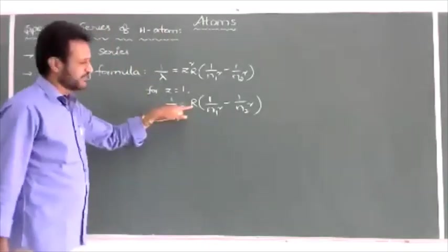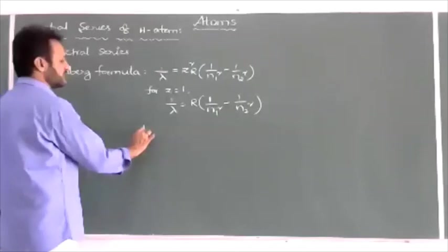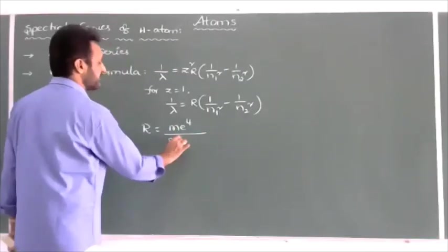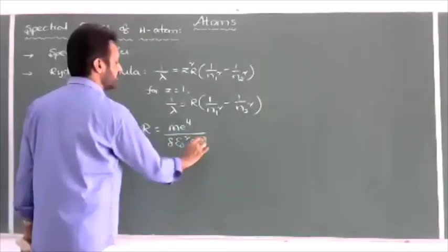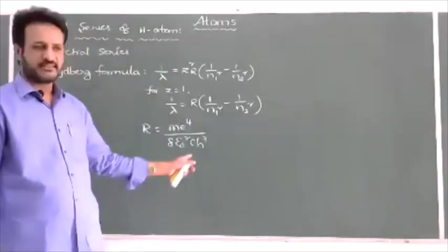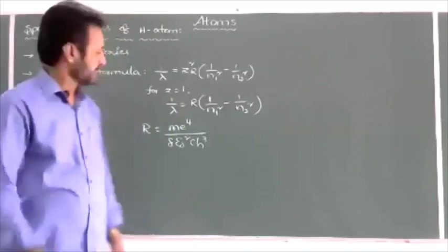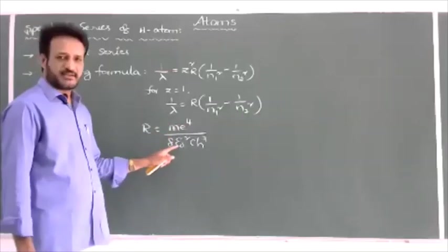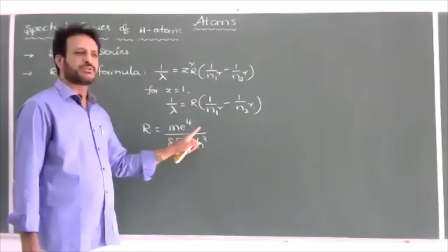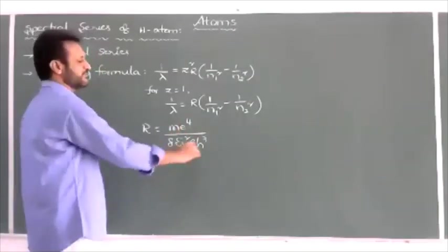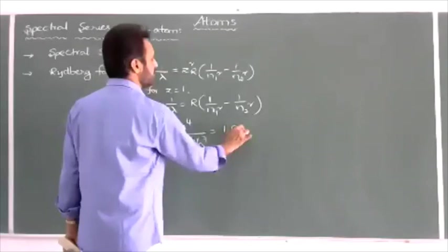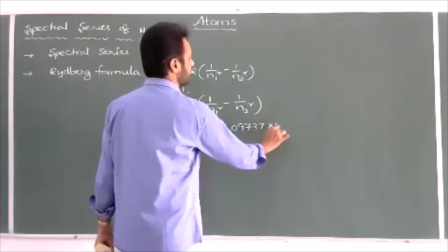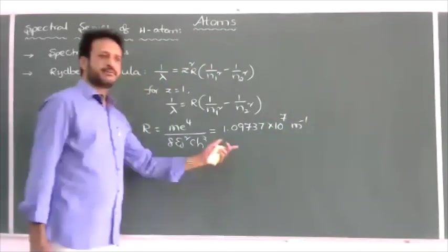The value of R was given in the previous class. The Rydberg constant R = Me⁴ / (8ε₀²ch³), where M is the mass of the electron, e is the charge, ε₀ is the absolute permittivity of free space, c is the speed of light, and h is Planck's constant. By substituting all values we get R = 1.09737 × 10⁷ per meter.